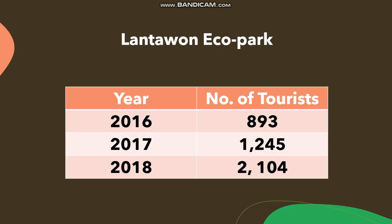For example, sobra 2,000 ang turista nga nagbisita sa Lantawon Echo Park sang tuig 2018. Mas damo ni kaysa 2017 nga may arak lang sobra 1,000 tourists or visitors. This is an example of descriptive information.